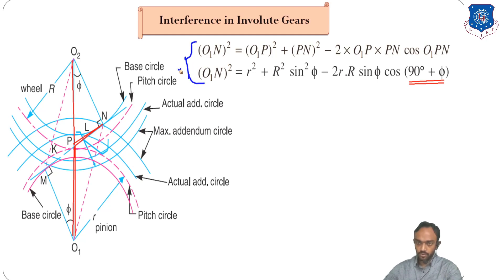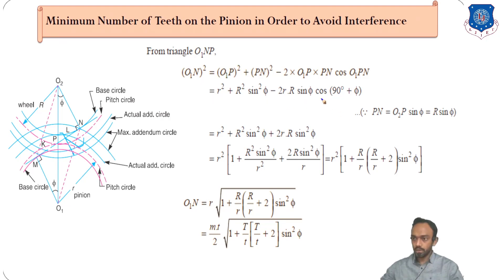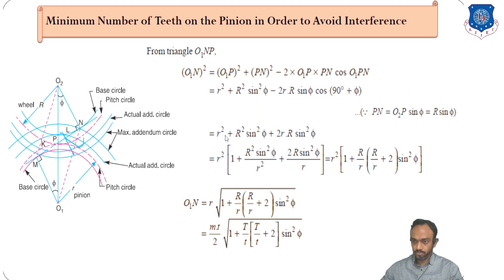Expanding the cosine rule, we get O1N² = r² + R²·sin²φ − 2r·R·sinφ·cos(90° + φ). Since cos(90° + φ) = −sinφ (second quadrant), the minus sign becomes plus, giving us: O1N² = r² + R²·sin²φ + 2r·R·sin²φ. Factoring out r², we get O1N² = r²·[1 + (R/r)·(R/r + 2)·sin²φ].